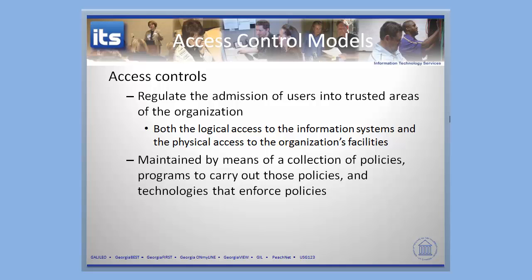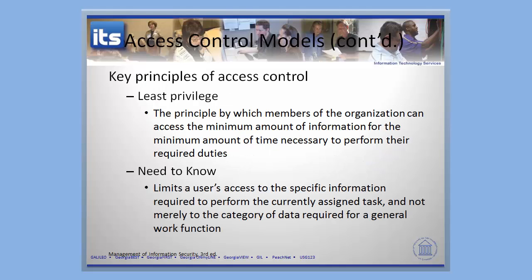There are some underlying principles that you need to consider for access control. The first one is the idea of least privilege — you want to build your system so that everyone is always operating with least privilege, meaning they have the minimum amount of privilege to do the authorized tasks they're supposed to do.